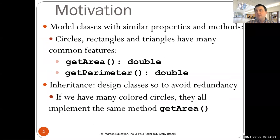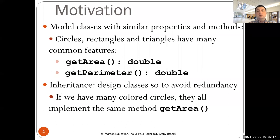The motivation for inheritance is that we want to model several classes with similar properties and methods. Consider implementing a Photoshop or Paint application with geometric figures like circles, rectangles, triangles, and squares with common features: all of them have a color, a Boolean data field for whether it's filled, a date when they were created, and common methods like getArea and getPerimeter. Inheritance allows us to define one class with all the common properties to avoid redundancy, and then implement subclasses that extend that class with additional features while inheriting all data fields and methods from the superclass.